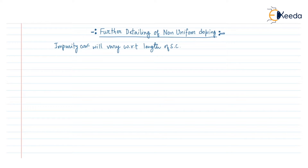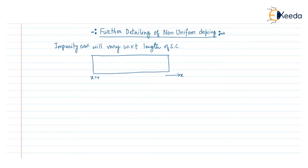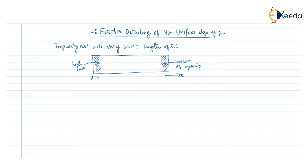In that case, if this is a semiconductor bar, we have already discussed that if this is x equals to 0 and this is the x-axis along which the length is varying — if this region is highly doped, that is high concentration of impurity, and the right region is lightly doped, that is low concentration of impurity — then the band diagram will look like this.